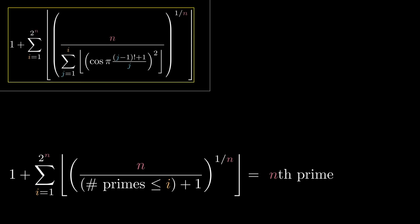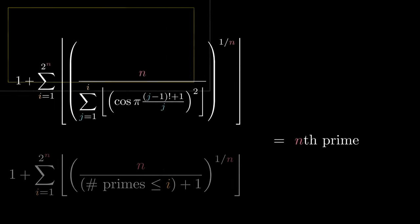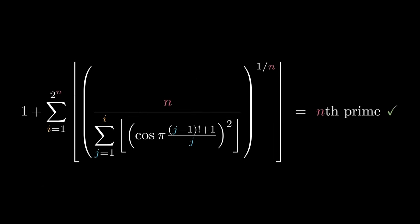Or do we? In practice, Willans' formula is excruciatingly inefficient. We have a ridiculous sum up to 2 to the n. Evaluating each term in that sum requires another large sum, and in that sum, we have to compute j minus 1 factorial a bunch of times, which involves roughly j multiplications each. So even for reasonably small values of n, this formula takes forever.